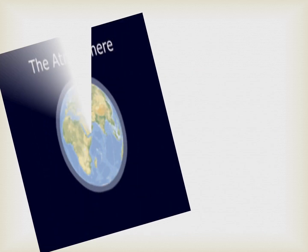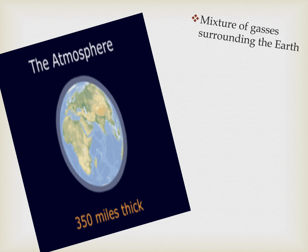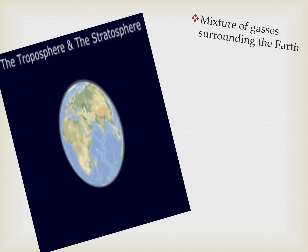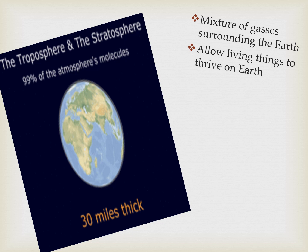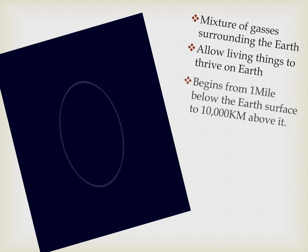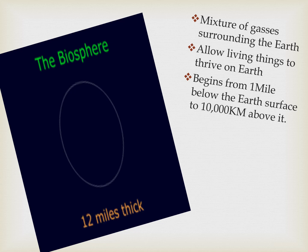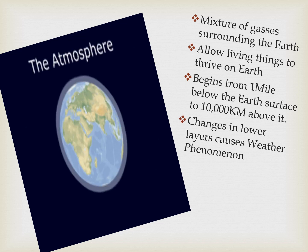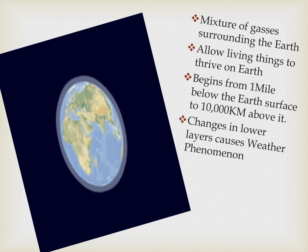The atmosphere is a mixture of gases that surround our earth. These gases surround the earth due to gravity. It allows living things to thrive or flourish on earth. It begins from one mile below the earth's surface to 10,000 kilometers above it.